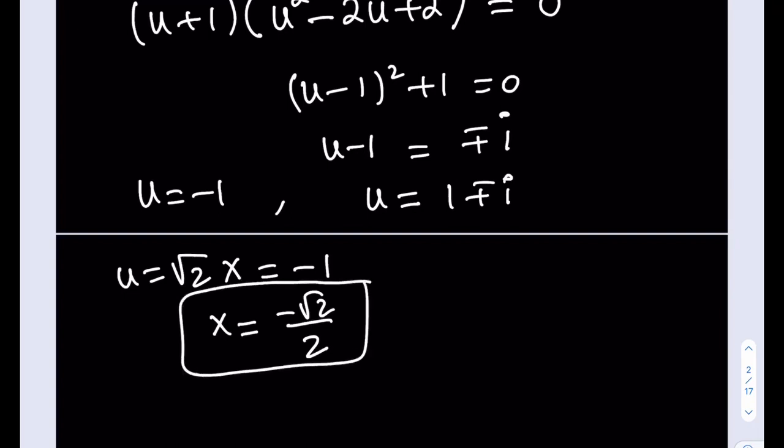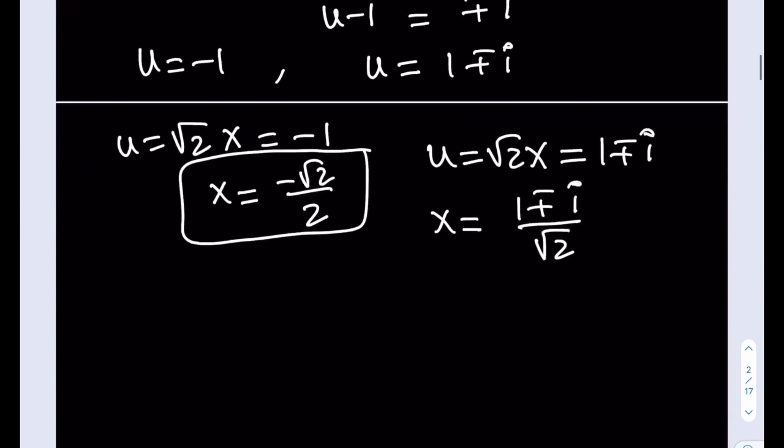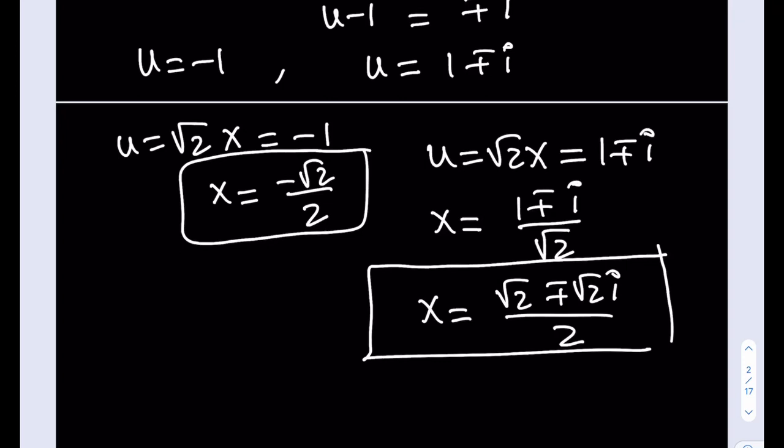And the complex solutions are going to be coming from this one. So if I go ahead and write it as 1 plus minus i. So now isolate the x by dividing both sides by root 2, and you're going to be getting this equation. If you want to rationalize the denominator, I mean, no big deal, but you're going to be getting multiplied by root 2. You're going to get root 2 plus minus root 2i divided by 2. And these are going to be the complex solutions to our equation.